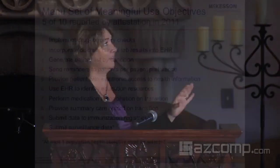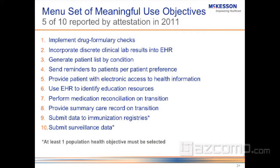When you look at the core, what the government has done is really greatly lowered the bar and made this very feasible to do. The second piece is the menu set. In the menu set, there are ten choices, and out of the ten choices, you have to choose at least one that's a population health objective — either number nine or number ten — and that counts as one of your five.